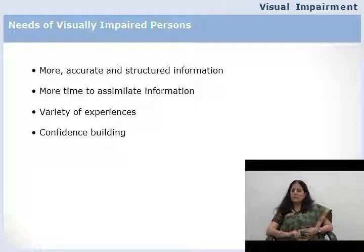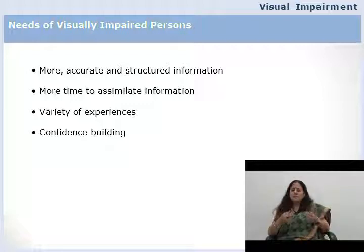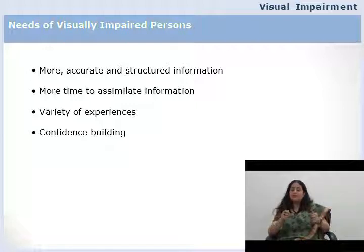Visually impaired children need a variety of experiences to understand different concepts and generalize them. A very important need is psychological — particularly for a person who has lost vision later in life, the teacher must be sensitive and build confidence that the person can still do, with support, what they used to do earlier. A visually impaired person has no other disability unless there is an associated condition, so their cognitive functioning is normal. They will follow a regular curriculum but will also need an expanded core curriculum to compensate for their visual loss.